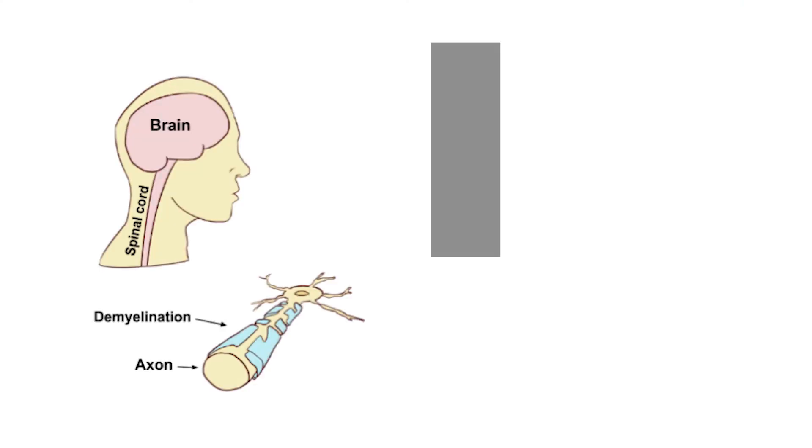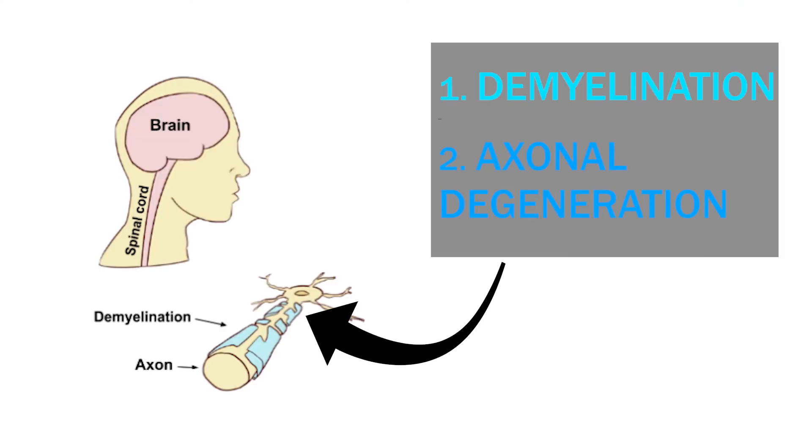If we now take a look into the brain or the spinal cord of an MS patient then we find two kinds of damages. Demyelination and axonal degeneration. Axons or nerve fibers are important for conducting electrical pulses and these axons are degenerated in multiple sclerosis patients.